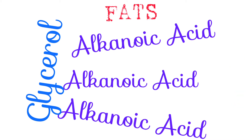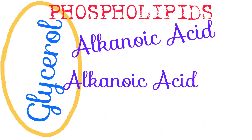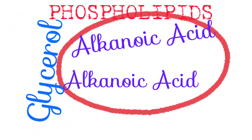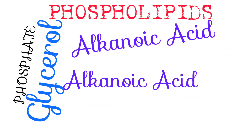But for phospholipids, the glycerol is only attached to two alkanoic acids, and the last OH group attaches to a phosphate group instead — hence the name phospholipid. Also, most of the time, another molecule like choline could be linked to the phosphate group.